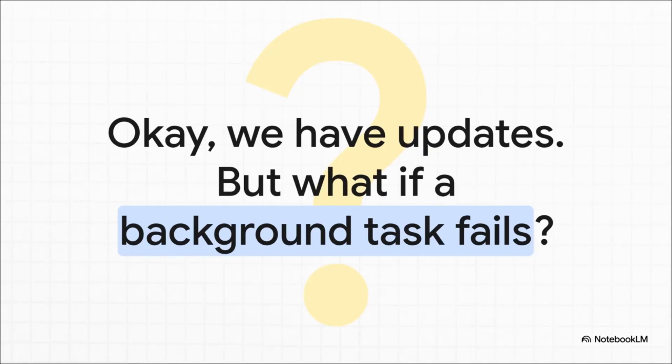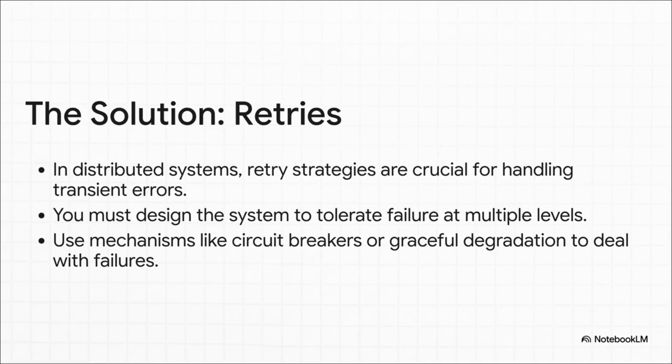So our app feels fast, we're getting updates, things are looking pretty good. But in the world of computing, things go wrong. What happens if that background worker tries to apply the photo filter but it fails because of a temporary network hiccup? We can't just let the job die. The solution is to build a resilient system using a retry strategy. If a task fails because of a temporary or transient error, the answer is simple — just try it again.